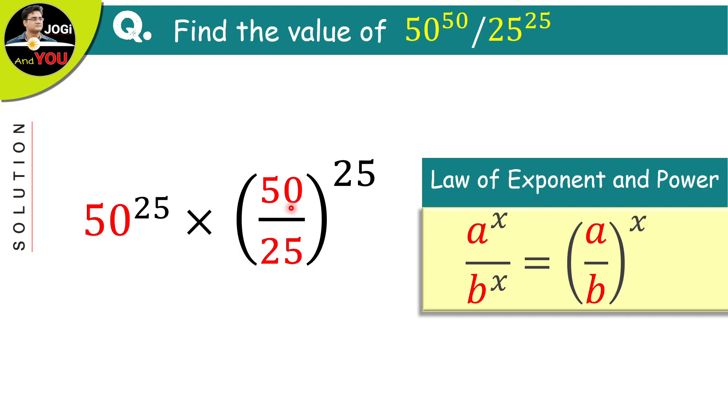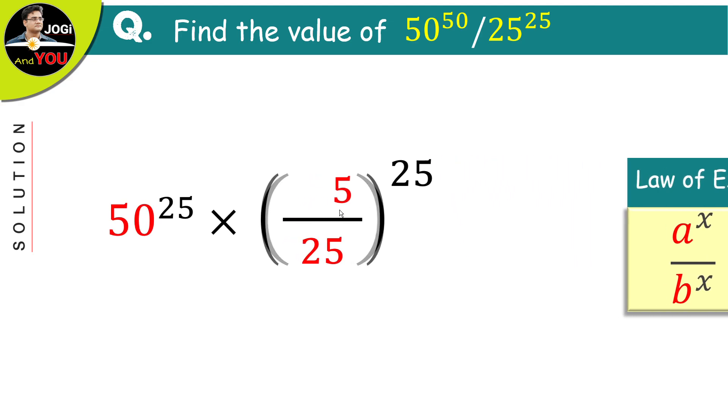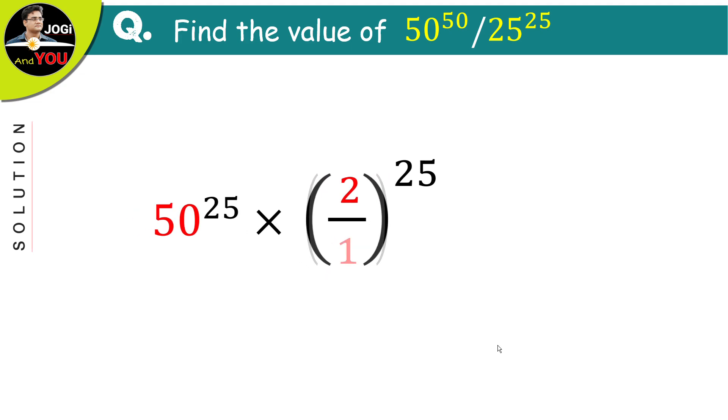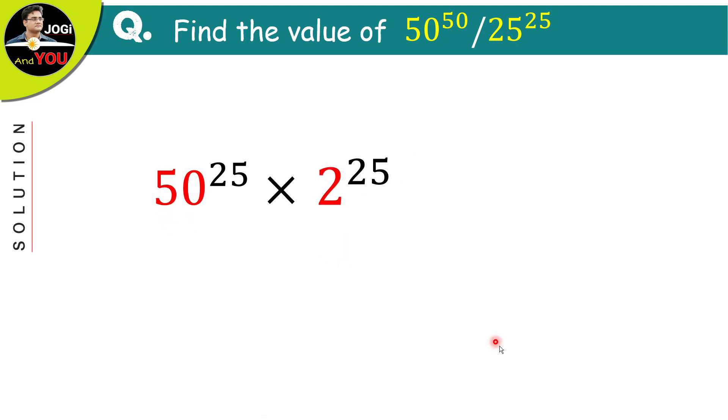We can write this 50 as 2 times 25. 25 to 25 cancels and we have 2 over 1, the whole raised to the power of 25. That means 2 to the power of 25.